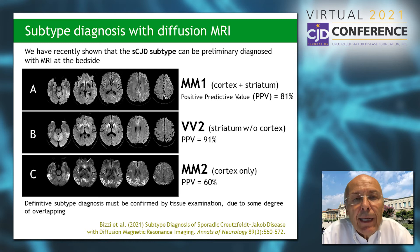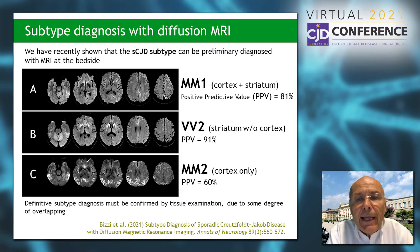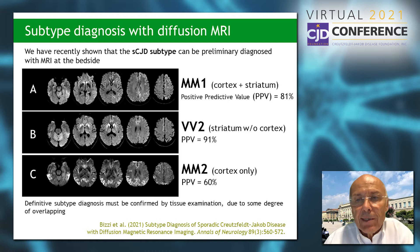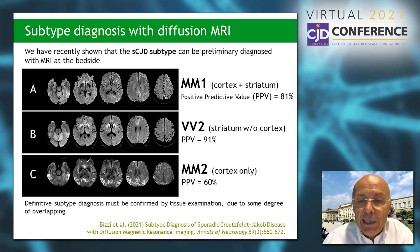We have recently shown in an article that the CJD subtype can be preliminarily diagnosed with MRI at the bedside using a diagnostic algorithm. The different subtypes — MM1, VV2, and MM2 — show a different distribution of lesions on diffusion-weighted images. According to the algorithm, the positive predictive value was about 81% for the diagnosis of MM1, 91% for VV2, and 60% for MM2. The definitive diagnosis of subtype must be confirmed by tissue examination due to some degree of overlapping among the different subtypes.